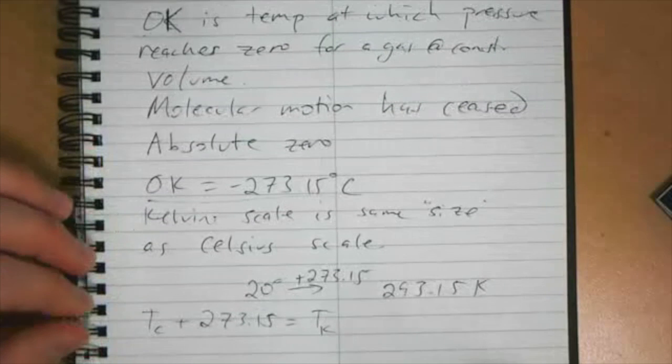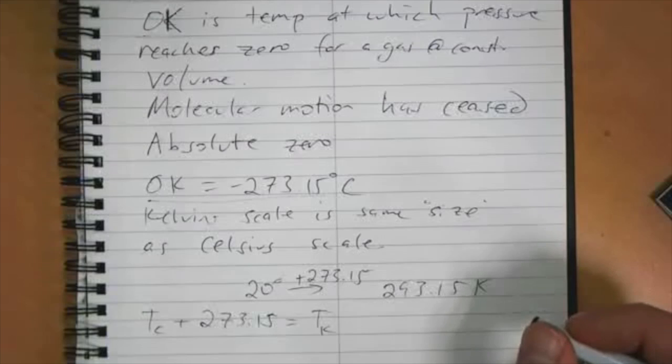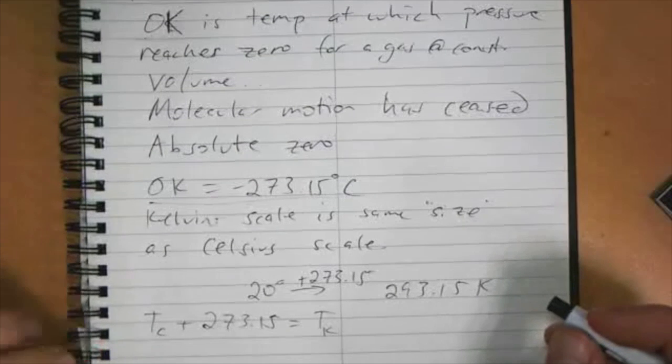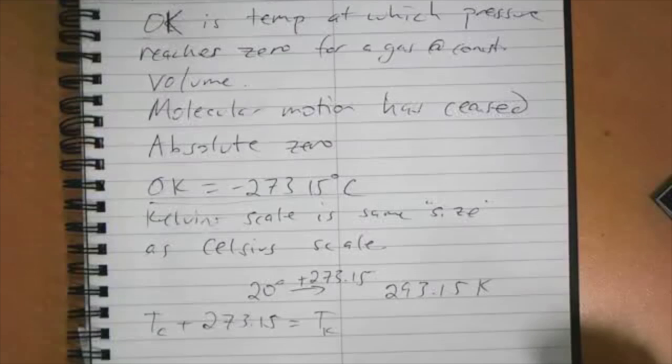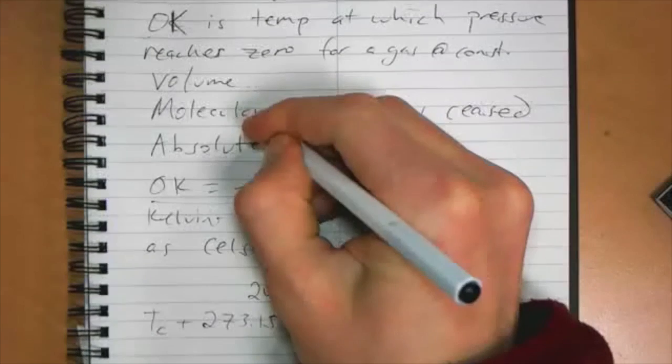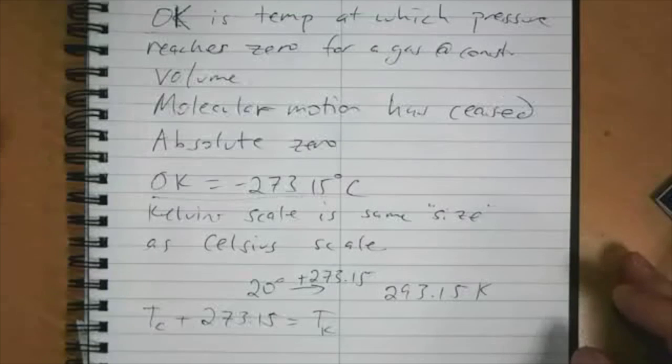There was actually an experiment done pretty recently where they created a negative Kelvin temperature, which is weird stuff. I can talk to you more about that if you're curious. But it follows a more recent definition of temperature, not in terms of molecular motion, but in terms of what happens if you add energy. It's a very strange thing. I may talk about that in class, but it's just kind of bizarre. If you search negative Kelvin, it will probably show up and tell you about that.